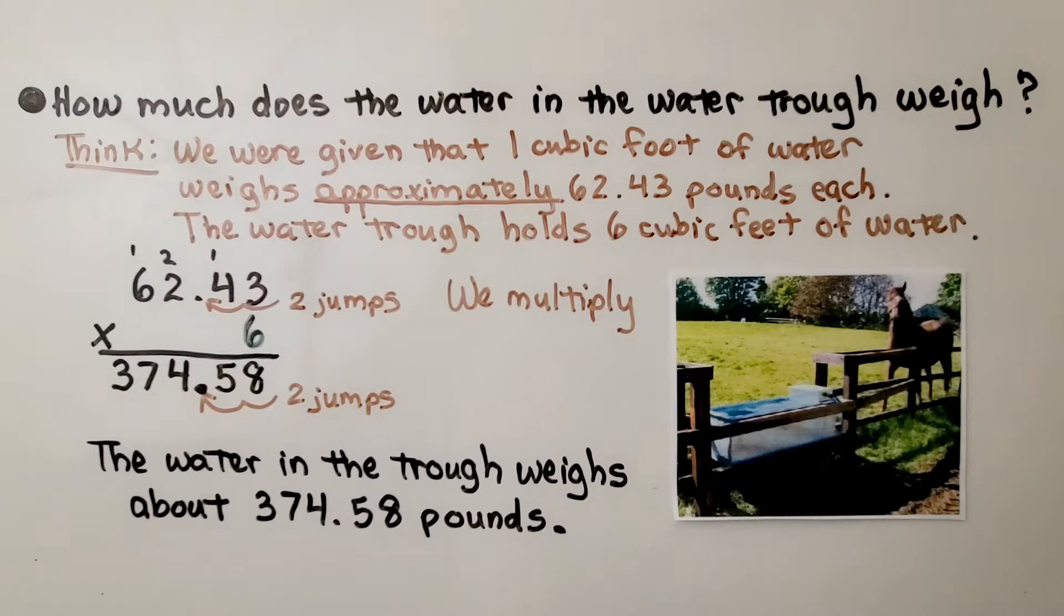How much does the water in the water trough weigh? We were given that 1 cubic foot of water weighs approximately 62.43 pounds each. And the water trough holds 6 cubic feet of water. We found that out. That was the volume. We multiply.